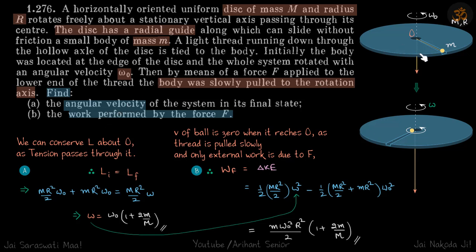So the angular momentum: the initial angular momentum is because of the disc and the mass both. So I of disc into omega naught plus I of mass M into omega naught. And final momentum: because this ball has reached the center, the ball is not rotating anymore.